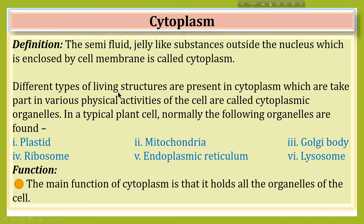Cytoplasm. The semi-fluid, jelly-like substance outside the nucleus which is enclosed by the cell membrane is called cytoplasm. Different types of living structures present in cytoplasm that take part in various physical activities of the cell are called cytoplasmic organelles. In a typical plant cell, the following organelles are normally found: plastid, mitochondria, Golgi body, ribosome, endoplasmic reticulum, and lysosome. The main function of cytoplasm is that it holds all the organelles of the cell.